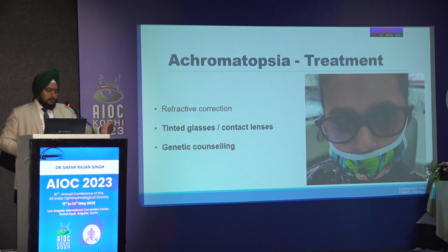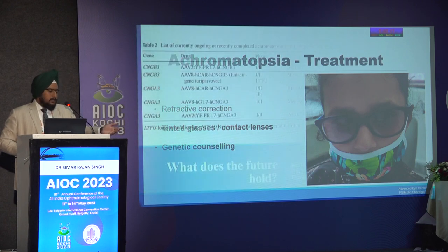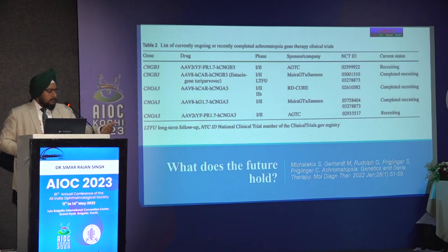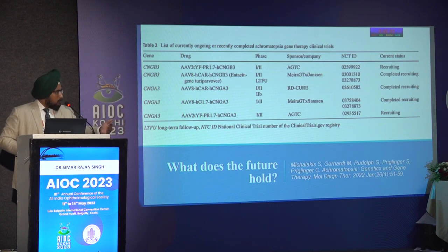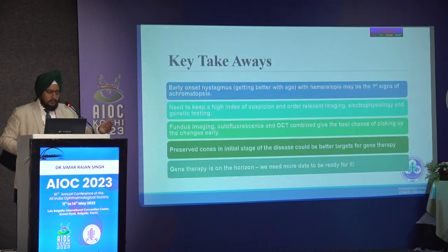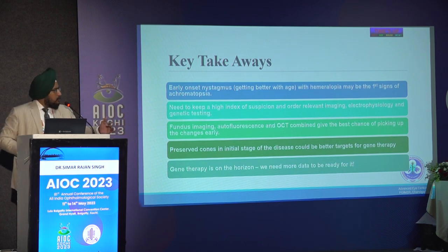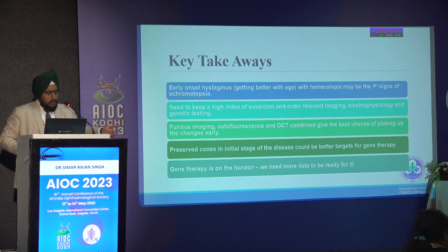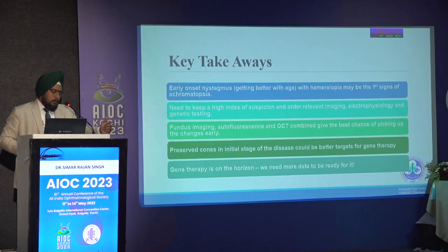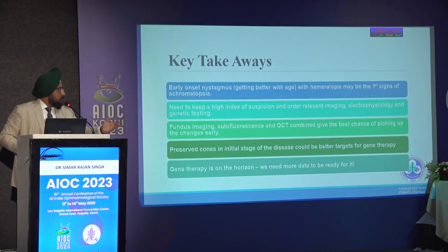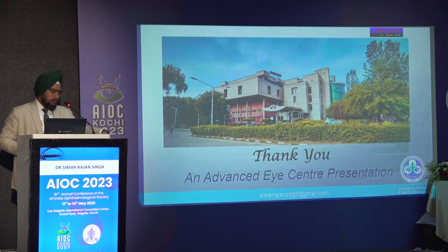Treatment was mostly refractive correction, tinted glasses or contact lenses, and counseling. The future holds promise as at least 5 clinical trials are ongoing, 3 of which have published data showing some efficacy and safety. Early-onset nystagmus improving with age and hemeralopia may be the first signs of achromatopsia. A high index of suspicion is needed, with relevant imaging, electrophysiology and genetic testing. Preserved cones in initial OCT stages could be predictors of better targets for gene therapy, and more Indian data is needed.